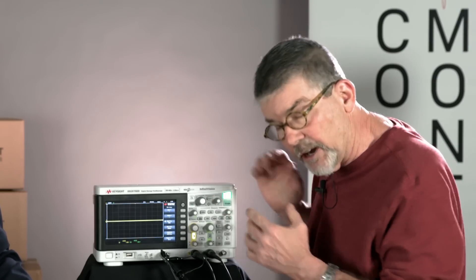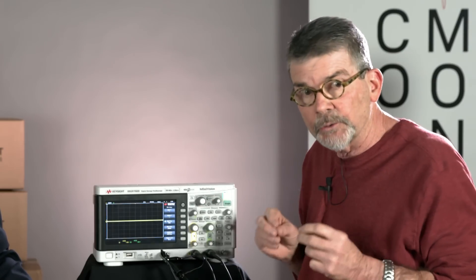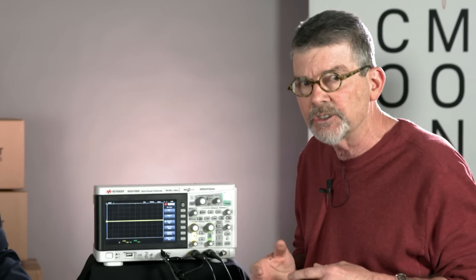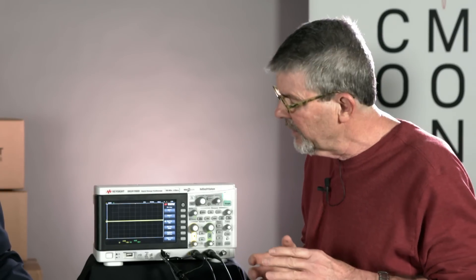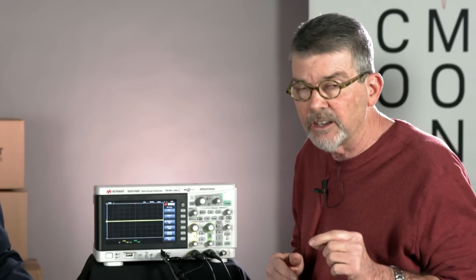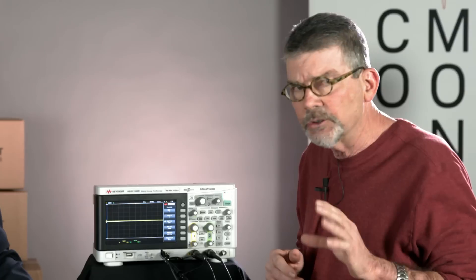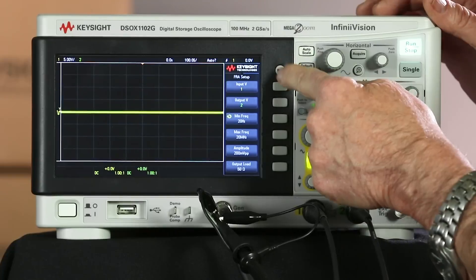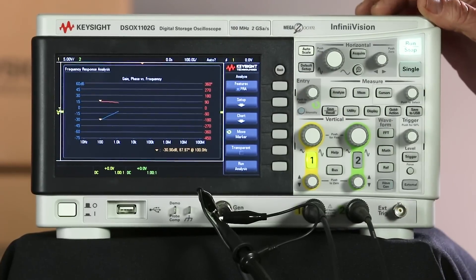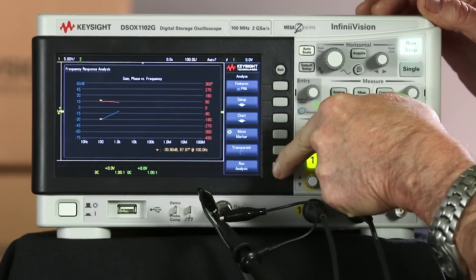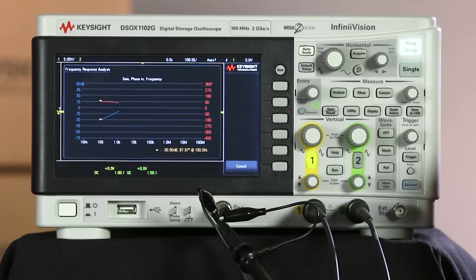Now, the amplitude, this is in volts peak to peak. Now, most standalone frequency response analyzers or network analyzers typically have them set in either voltage RMS or DVM. So you just need to do the conversion if you're going to compare apples to apples. So we'll press the back key. And the next thing is just press run analysis.